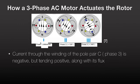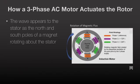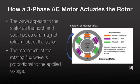Current through the winding of pole pair C, in other words phase 3, is negative but tending positive along with its magnetic flux. As a result, a magnetic flux wave is set up. The flux created by the stator poles rotates from one pole to the next, and appears to the stator as the north and south poles of a magnet rotating around the stator. The magnitude of the rotating flux wave is proportional to the applied voltage.